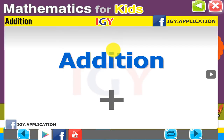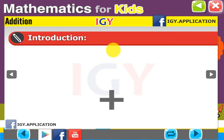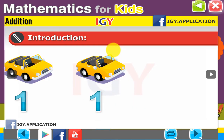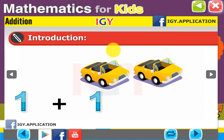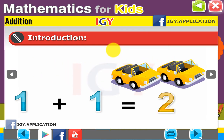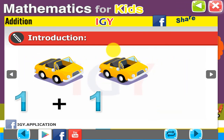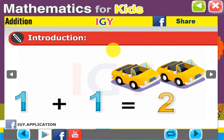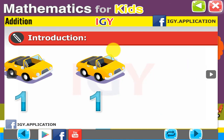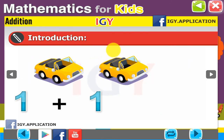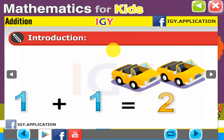Addition. Addition symbol. 1 car plus 1 car — now we have 2 cars. 1 plus 1 equals 2. Note that we add the 2 numbers together.